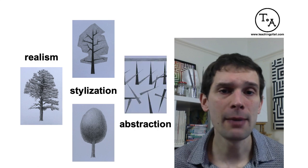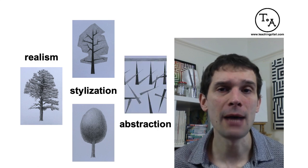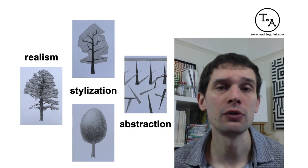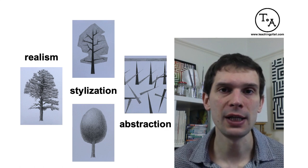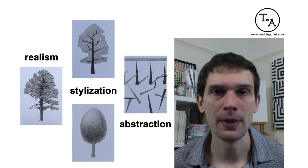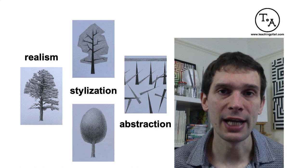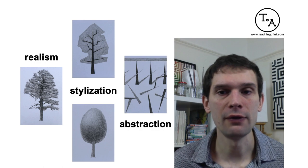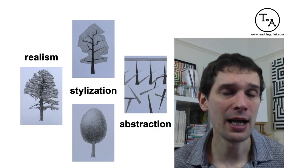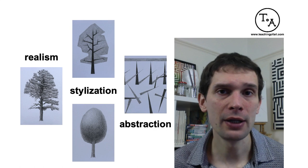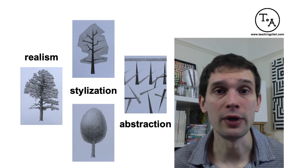In abstract art, you can no longer recognize the drawn subject, because abstraction does not resemble anything you would normally see in real life. One way to create abstract art is to start with a realistic drawing and then slowly stylize and simplify the subject until it is no longer recognizable — that is what I've shown you here as one way to create abstract art.